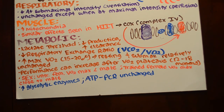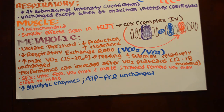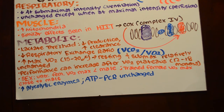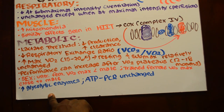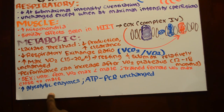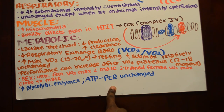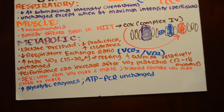Looking back at metabolism — specifically glycolysis — we see an increase in glycolytic enzymes, which are things covered in the second chapter of this course. We also see that the ATP-phosphocreatine system is unchanged. This is interesting to note because it makes generating ATP easier, yet it doesn't change at all — which might come up as a trick question on an exam.